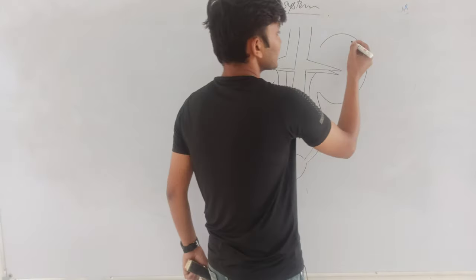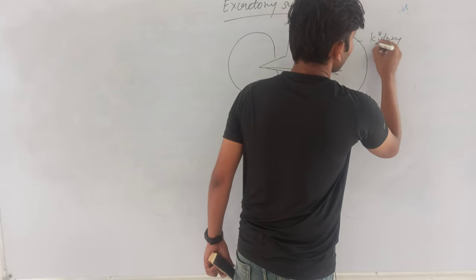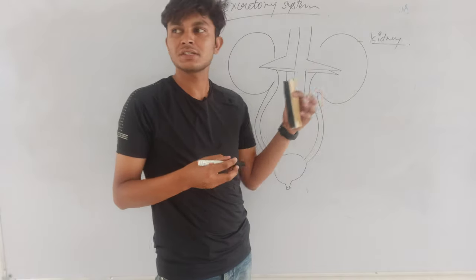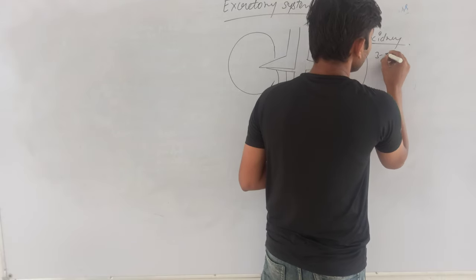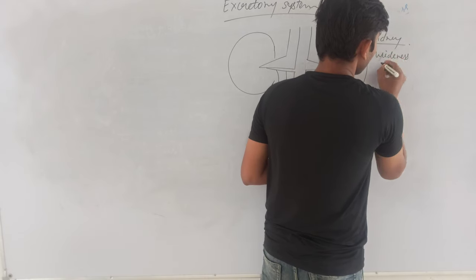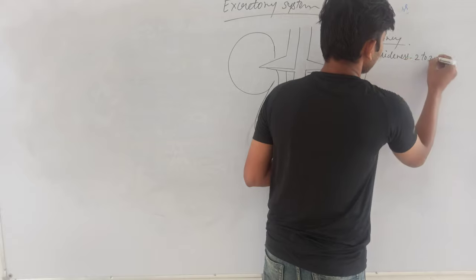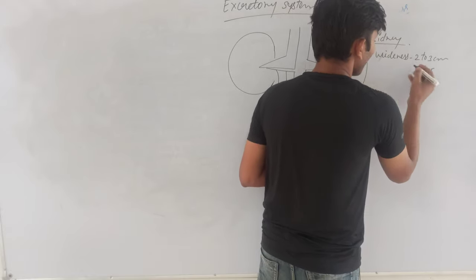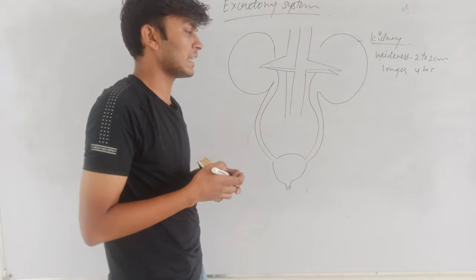The first organ we will talk about is the kidney. Kidneys are bean-shaped structures. If we talk about the width, it is 2 to 3 cm wide and 4 to 5 cm in length.